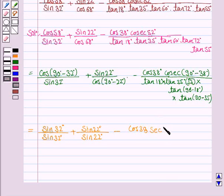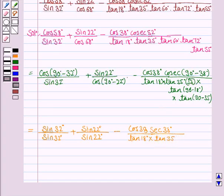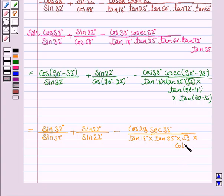So the expression becomes: sin 32° / sin 32° + sin 22° / sin 22° − cos 38° × sec 38° / (tan 18° × tan 35° × √3 × cot 18° × cot 35°), since tan(90° − θ) = cot θ, so tan 72° = cot 18° and tan 55° = cot 35°.